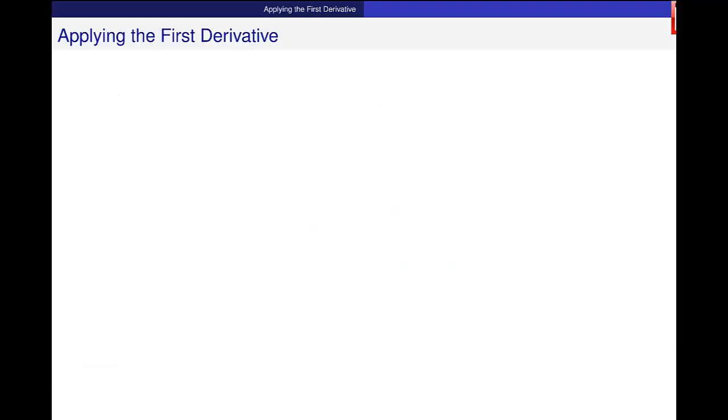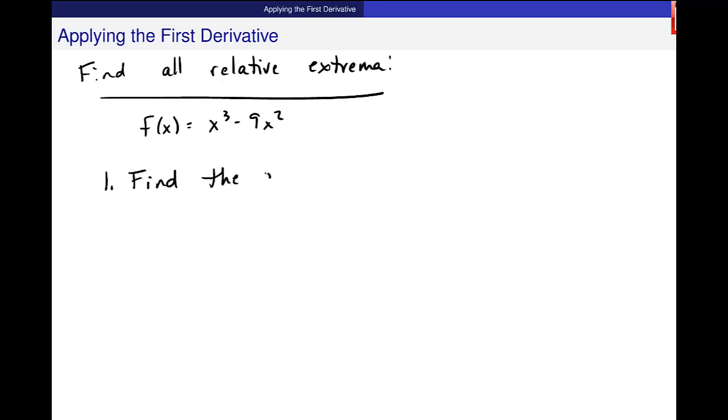So I want to do an example problem for you guys. Find all relative extrema for this function f(x) is equal to x cubed minus 9x squared. So first, find the critical values. I need to find these because they're going to be the candidates for my relative maximums and minimums.